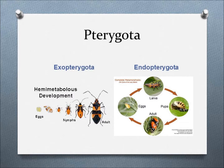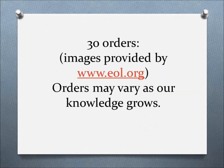Roland Entwistle also says that the group Pterogoda can be split into two other groups: Exopterogoda, meaning insects that go through incomplete metamorphosis, and Endopterogoda, insects that go through complete metamorphosis. So now that the background information is off the table, let's move to the actual orders.